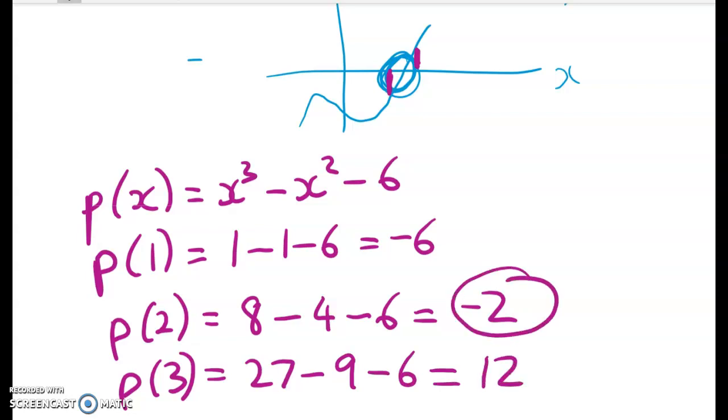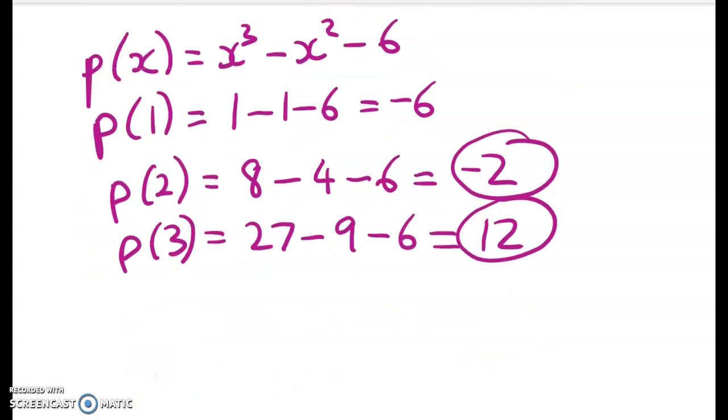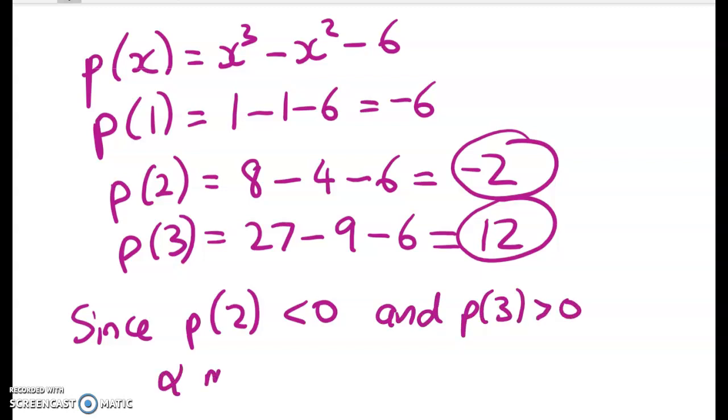So you can see that there's a change of sign. So we don't have to call it p we could call it f of x but we'll stick with our p. So since p of 2 is negative and p of 3 is positive alpha must lie somewhere in between.